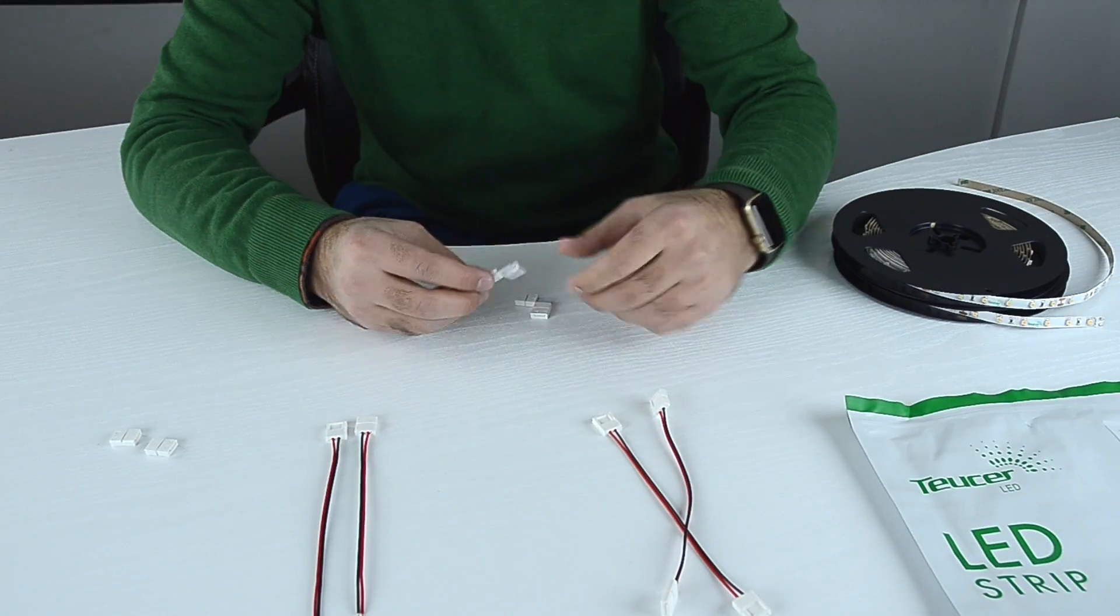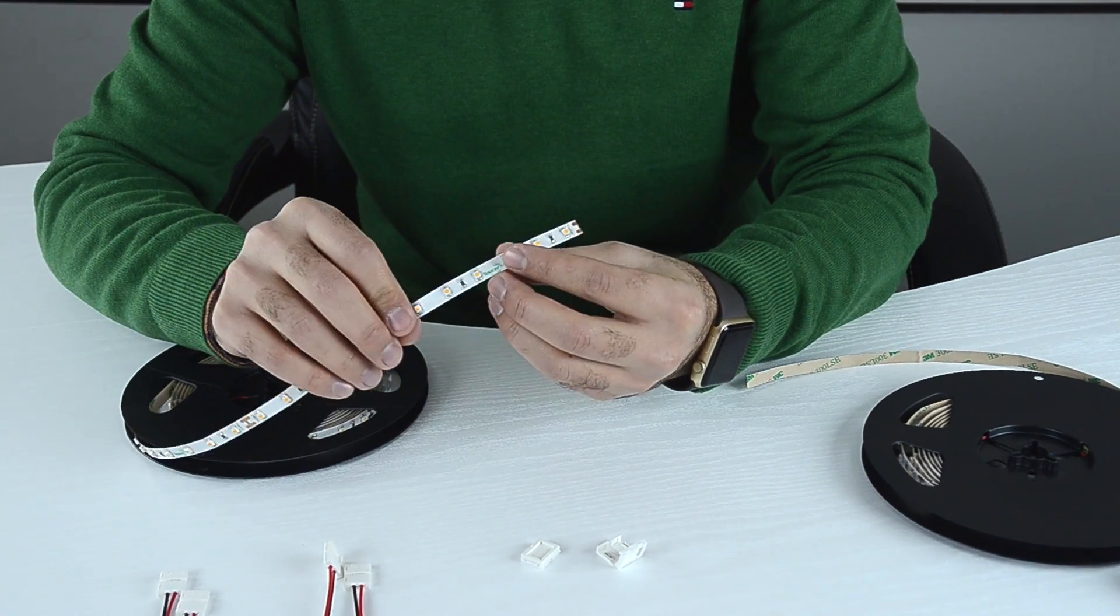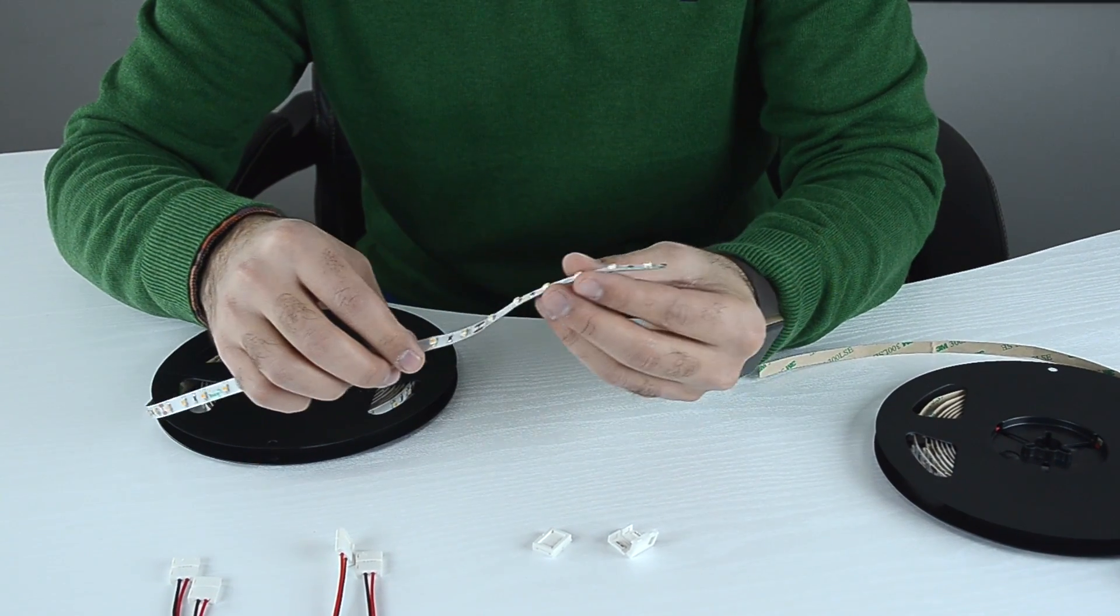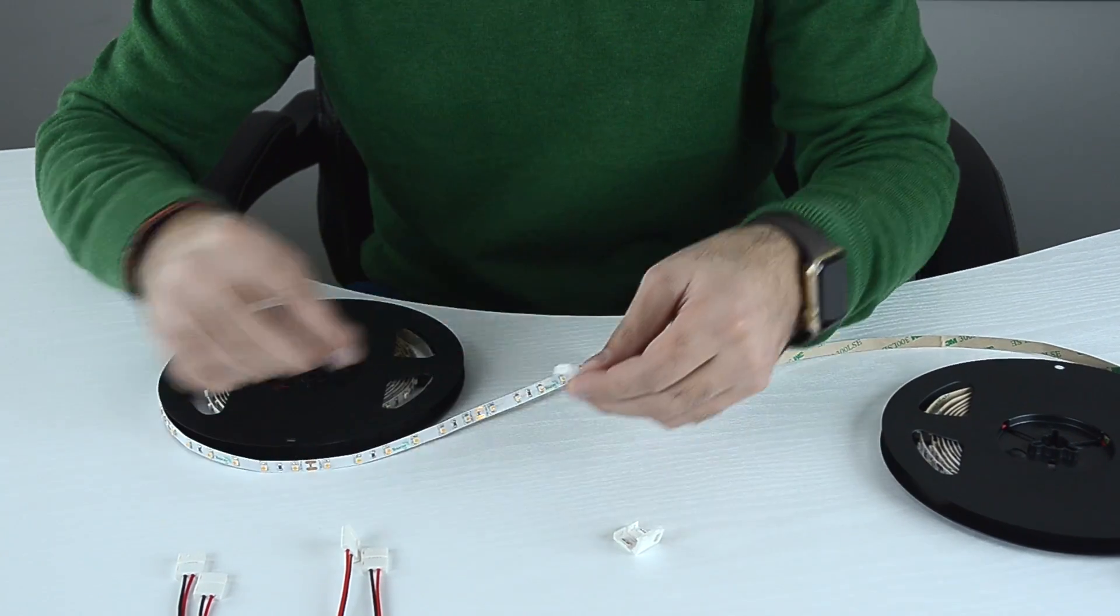So, let's connect the strip. We will start with connecting two reels of strip. Take the end of the strip you would like to connect. As you can see there are cutting points. We will simply attach the clip to these points.